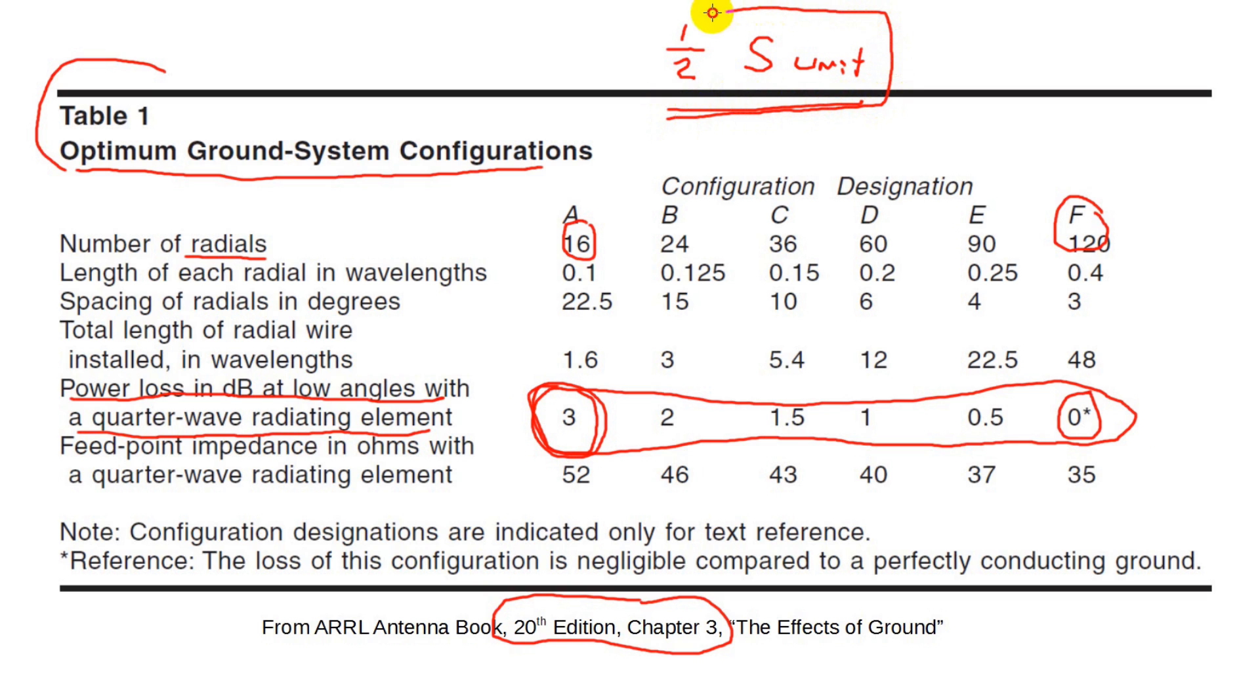That's one half of an S unit. Truthfully that's hardly worth mentioning. Another way of looking at this is if you already have a minimal radial system, the most you can get out of improving it, no matter how much you spend on copper wire, is 3 dB. Normal signal strength fluctuations are far more than that.